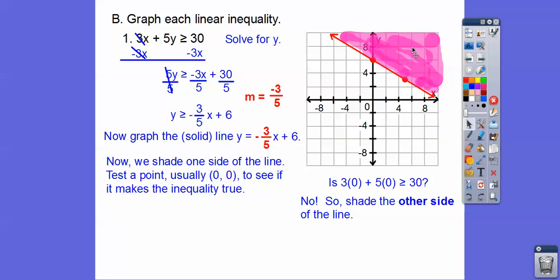And that means all of these points in this shaded region would satisfy this inequality right there. If I picked any point, let's say I went and did (6,6), it would make it yes. Watch, 3 times 6 is 18. 5 times 6 is 30. 18 + 30 ≥ 30. So all those points would be yes. All of these points would be no. So we just shade.